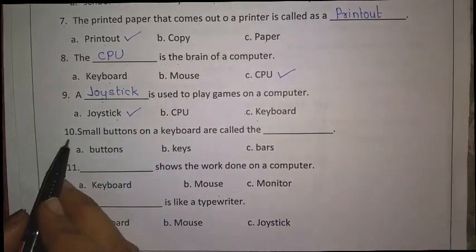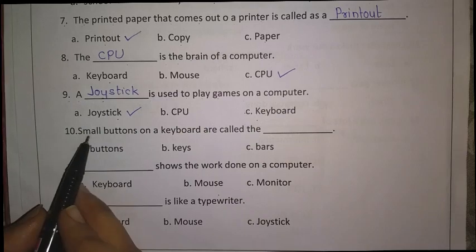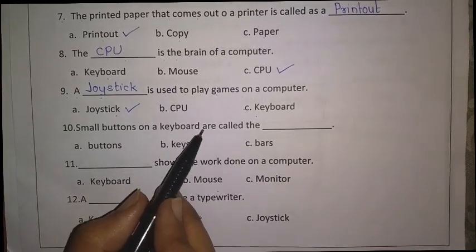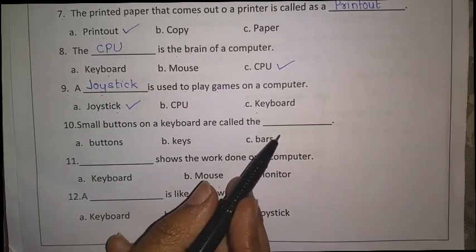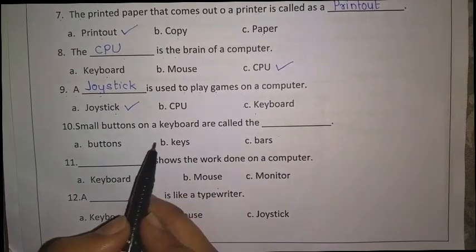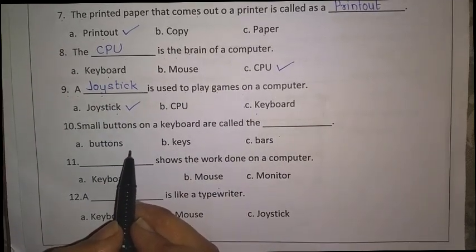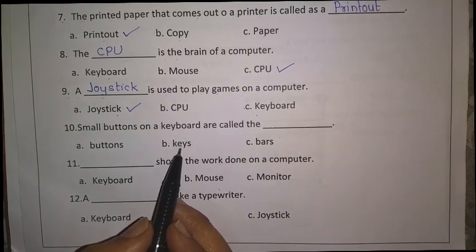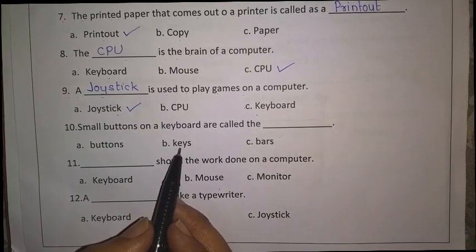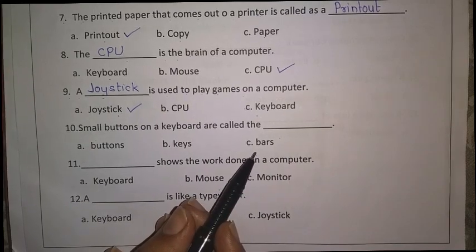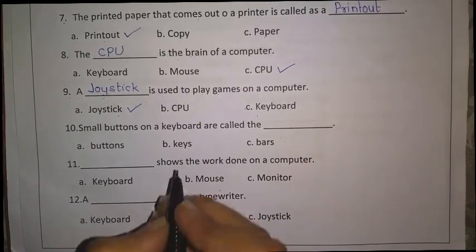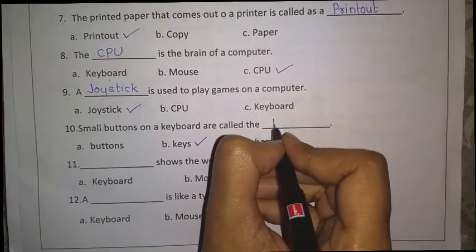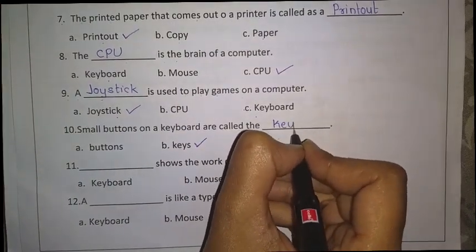Now let's move to tenth question: Small buttons on a keyboard are called a dash — what are they called? Buttons? No. Keys? Yes. Or bars? No, not bars either. So which is the right answer? Keys. So right here: keys.